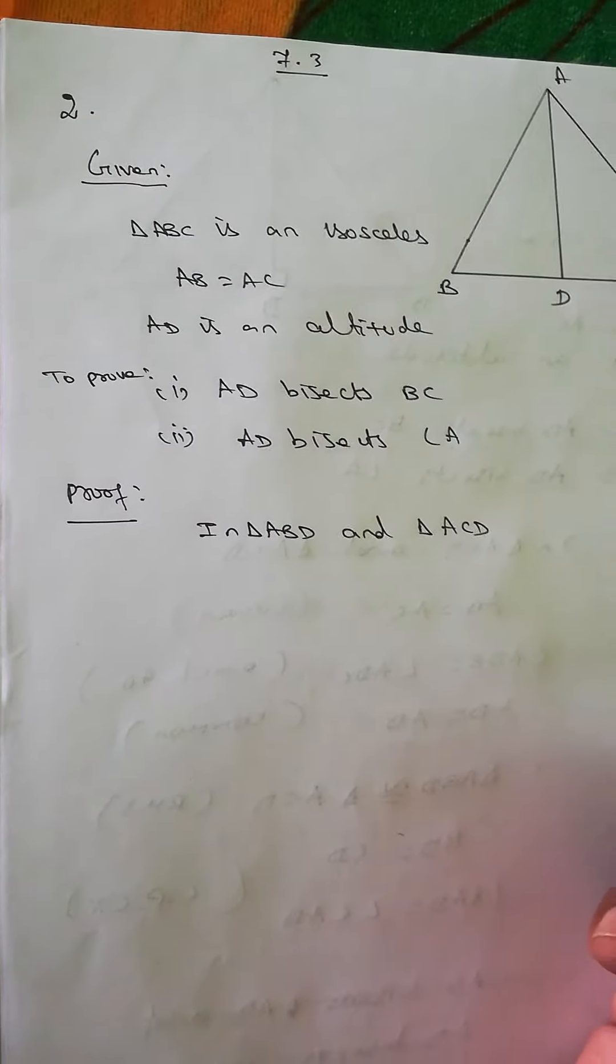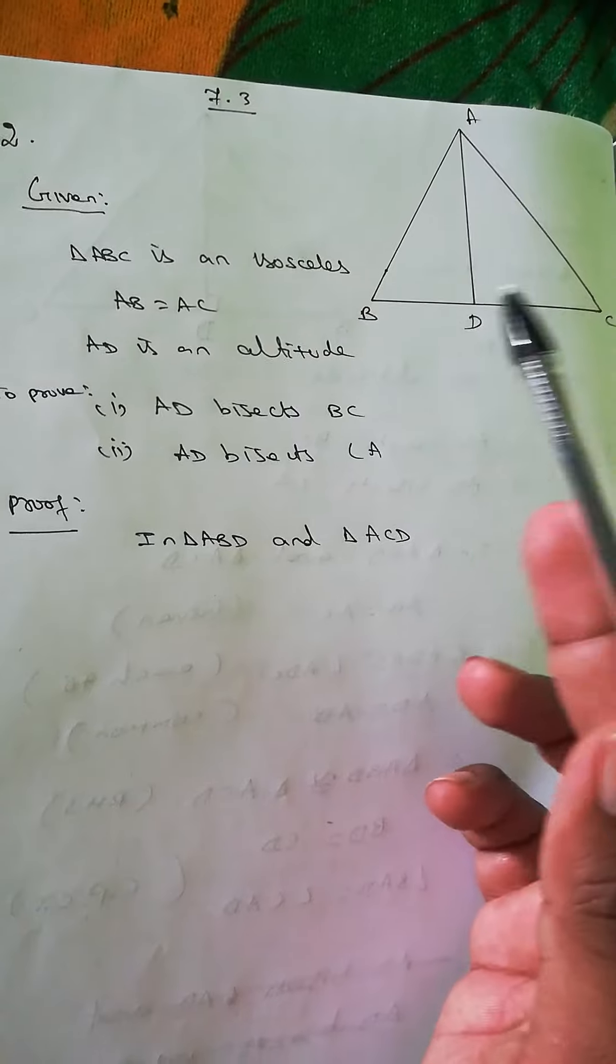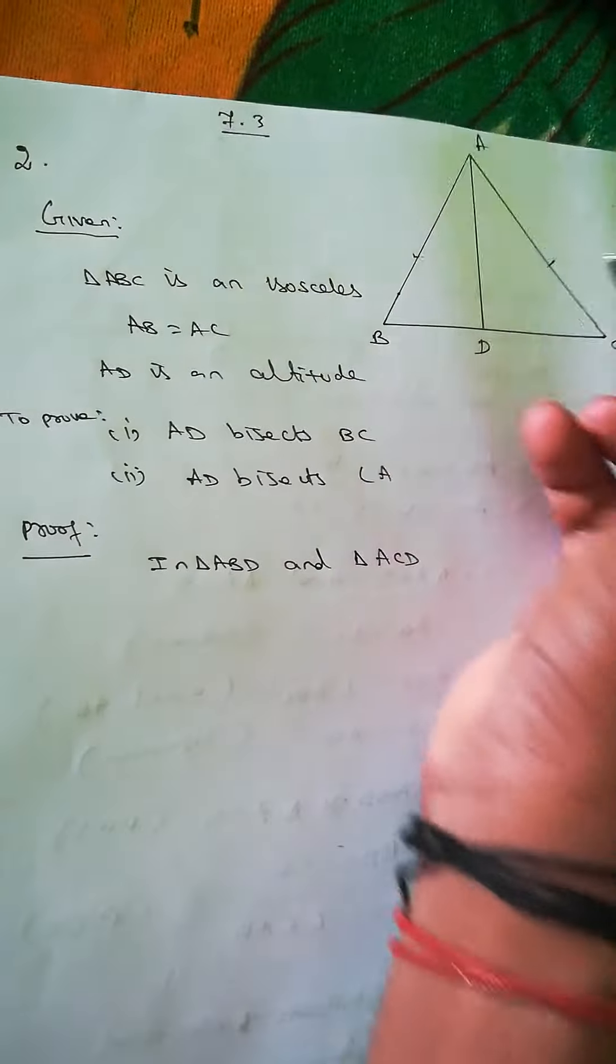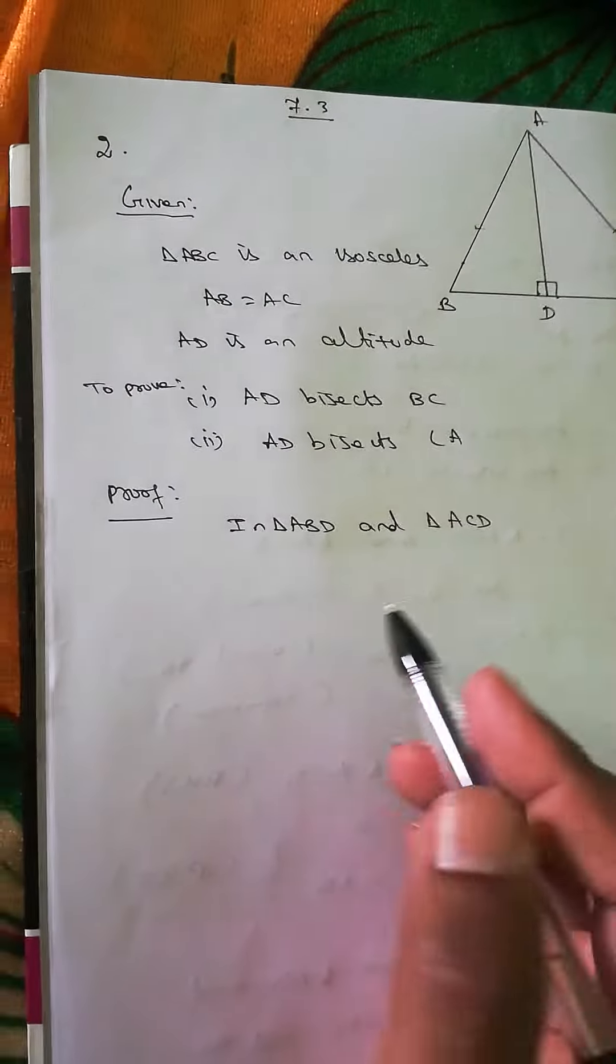Now the next question, question number two. Given triangle ABC is an isosceles triangle where AB equals AC, and AD is an altitude. We are going to prove that AD bisects BC.